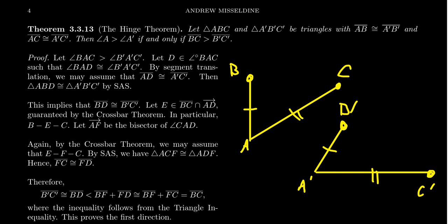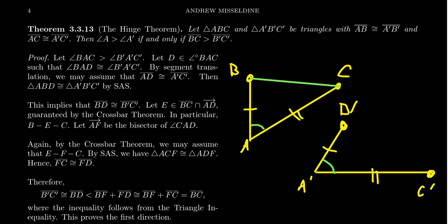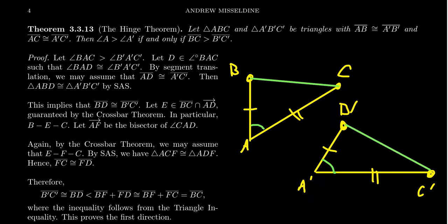This was intentional, for reasons I'll explain in just a second. So the statement of the Hinge Theorem is then going to be that if angle A is larger than angle A', that implies that the side BC is larger than side B'C', and vice versa. So if the side is larger, the angle is going to be larger as well. The idea is: when you have a bigger angle, you get a bigger side length.